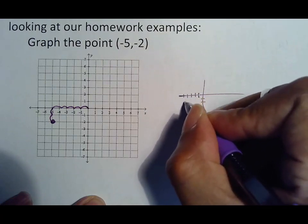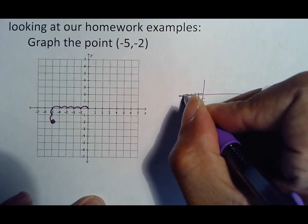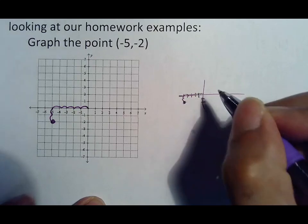5 back 2 down again: 1, 2, 3, 4, 5, then 1, 2. That's where you would be.